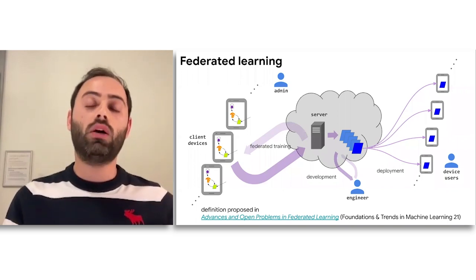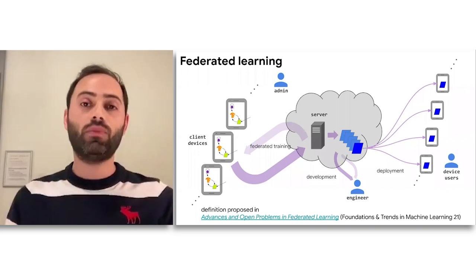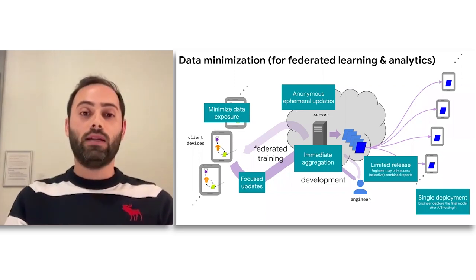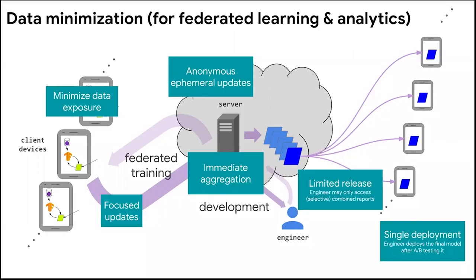So instead of pushing the data to the cloud, centralizing it all in one place leading to potential risks, you actually push the model to the edge, train the model where the data resides, and only send back updates that have been privatized. For federated learning, it really gives minimized data exposure because we don't give the data to the service provider — we only send focused updates, which are updated models trained on the edge. Then we aggregate those updates as soon as they arrive to the server — this is known as immediate aggregation. We discard any metadata related to the identities of the client devices — these are anonymous ephemeral updates — and once we obtain a model we like, we do only a single deployment at scale.